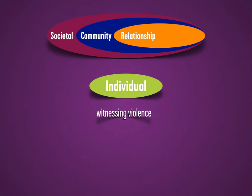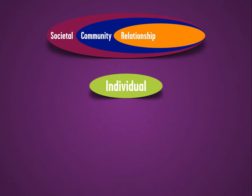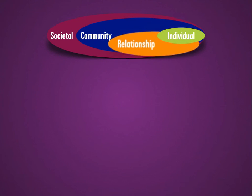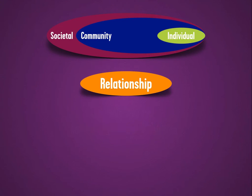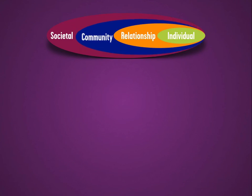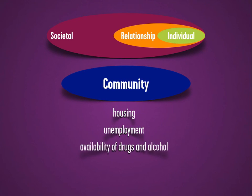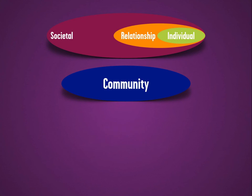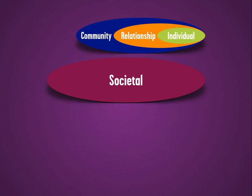For the individual, factors include witnessing violence, use of drugs or alcohol, presence of mental illness, age, and gender. For relationships, risk factors include alcohol or drug use and having friends that engage in violence. Community risk factors include housing, unemployment, and availability of drugs and alcohol. Societal factors include social norms and availability of weapons.